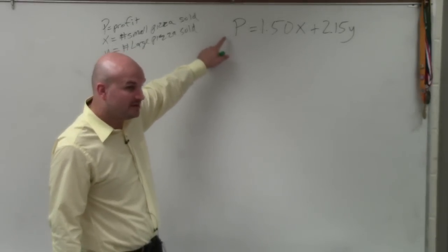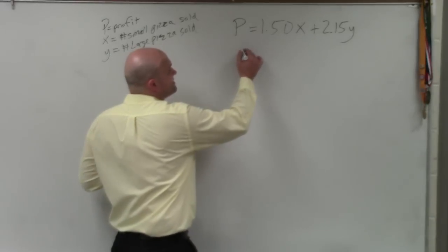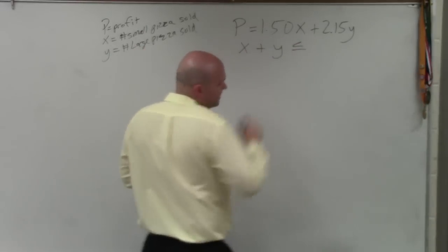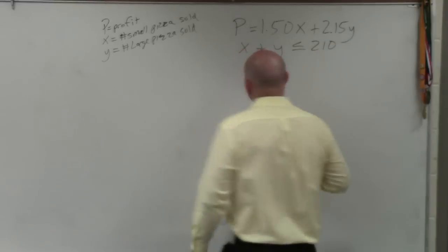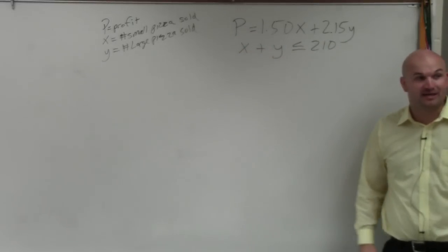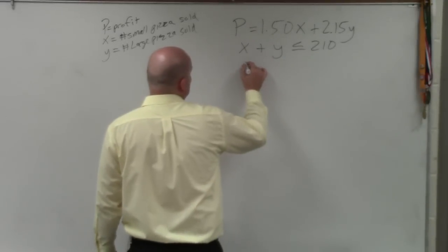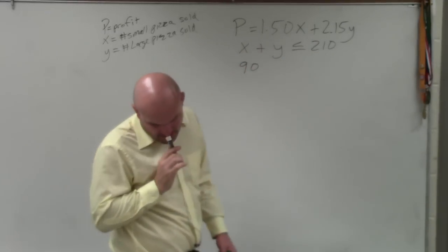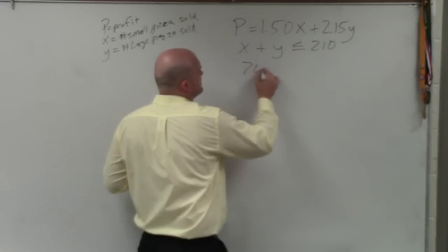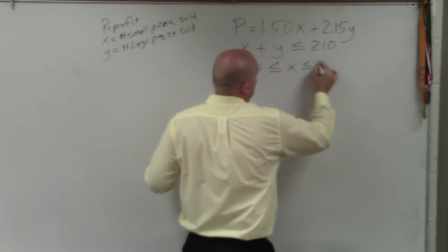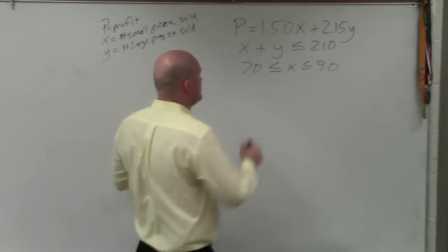That represents profit. Now, the problem is, we need to figure out x and y. Well, we don't know x and y. The only thing we do know is that they cannot make more than 210. We know that the total number of pizzas that they're going to make has to be less than 210. We also know that x has to be between 70 and 90. And y has to be between 100 and 140.